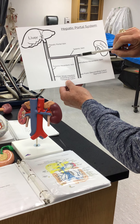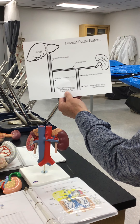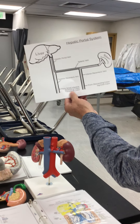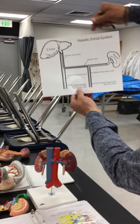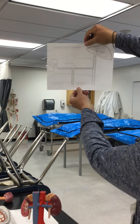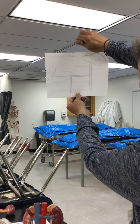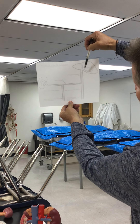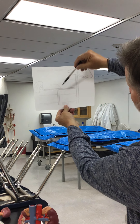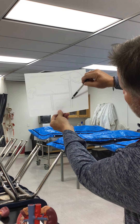Those of you who have this handout can make better sense of this. And if you turn this around this way, it will show you how the model is. Once again: here's the spleen, liver — so splenic vein, hepatic portal vein, superior mesenteric, inferior mesenteric.